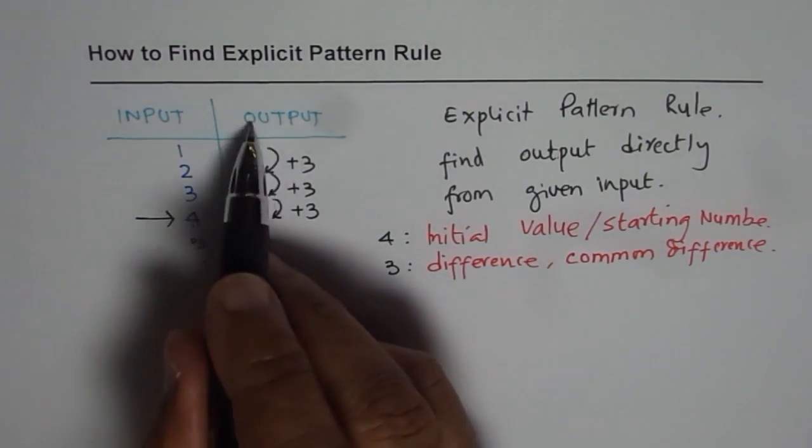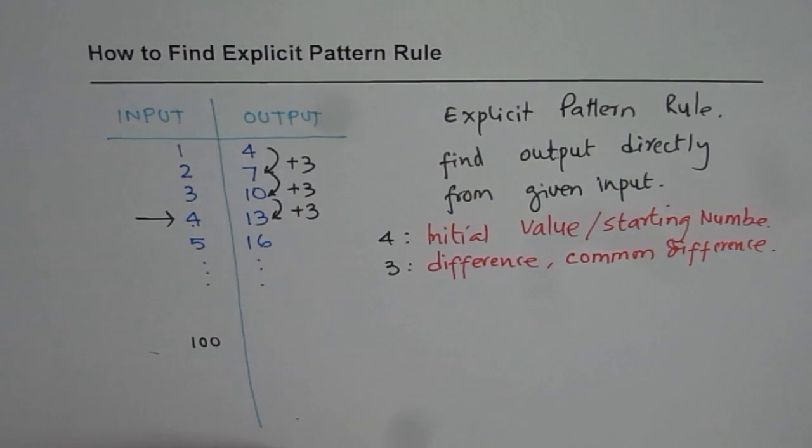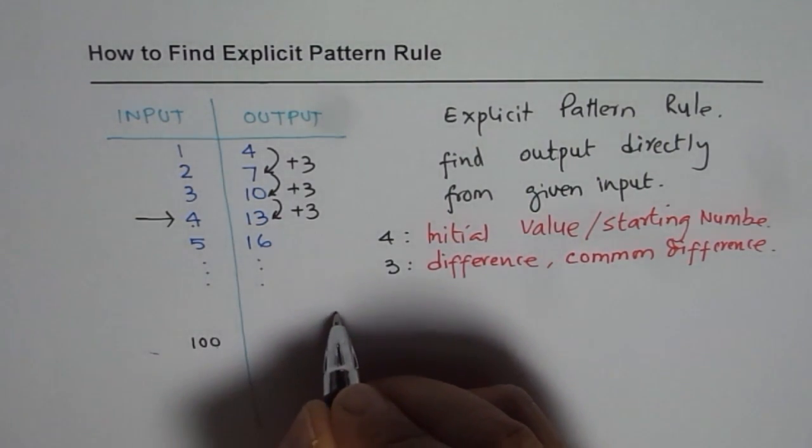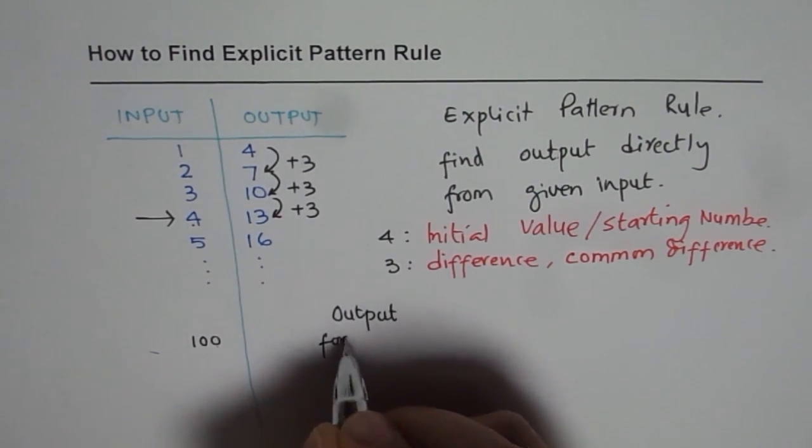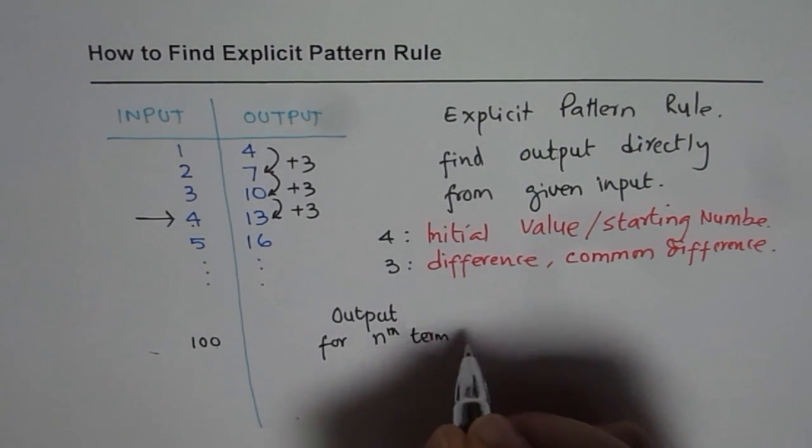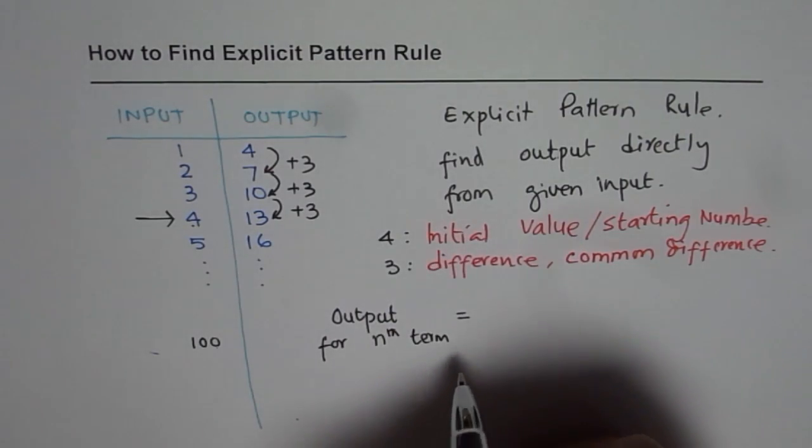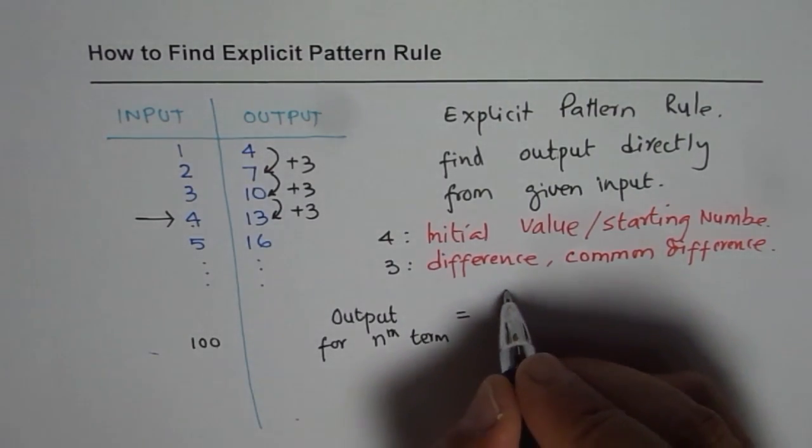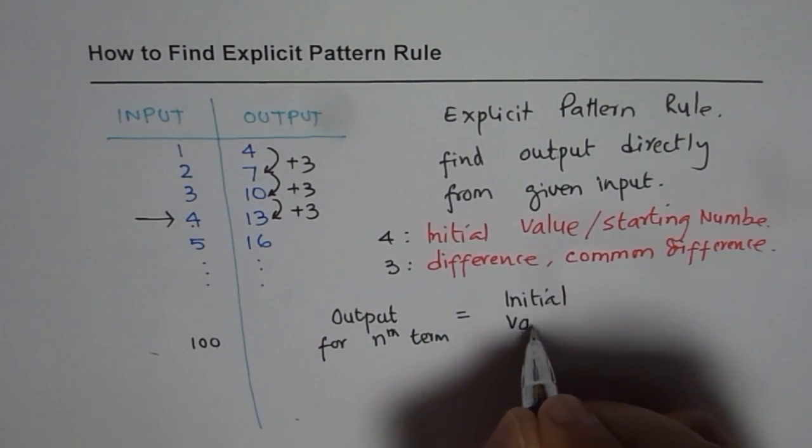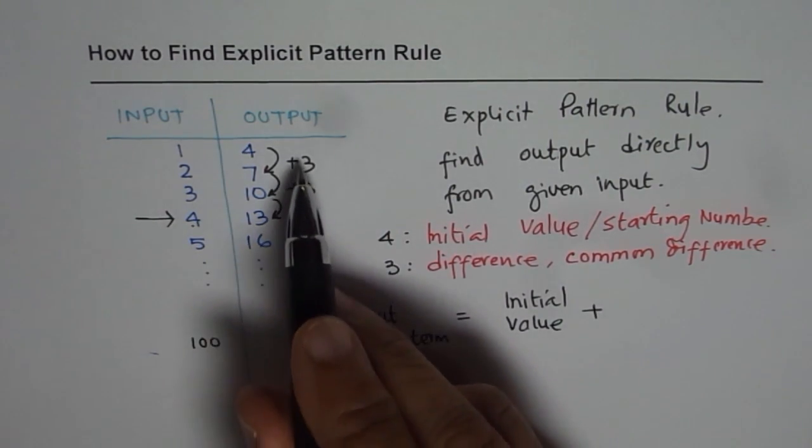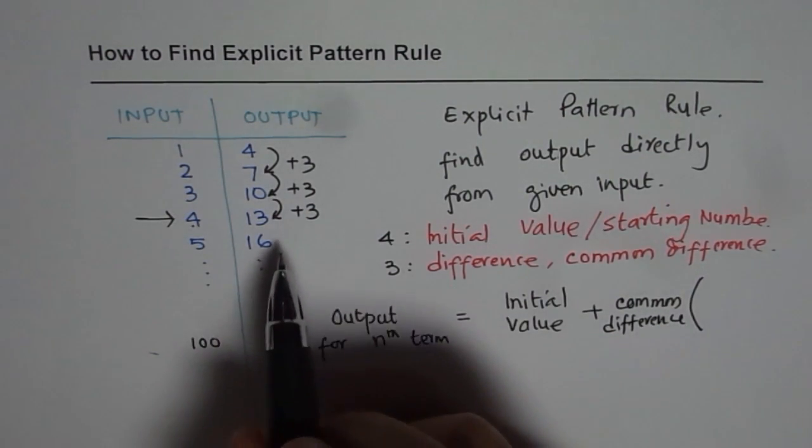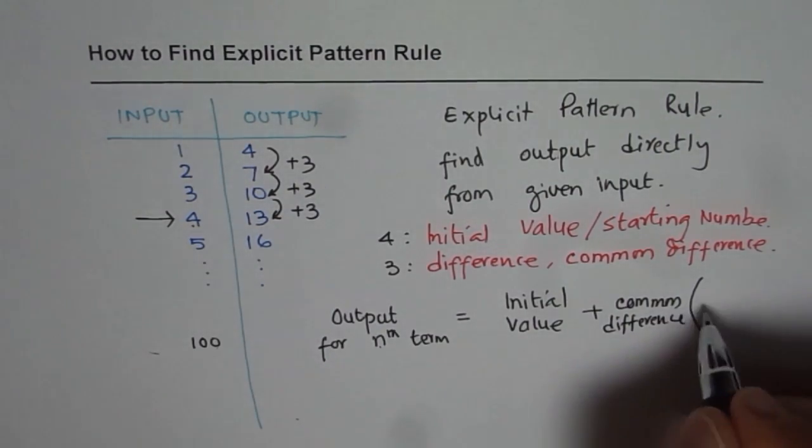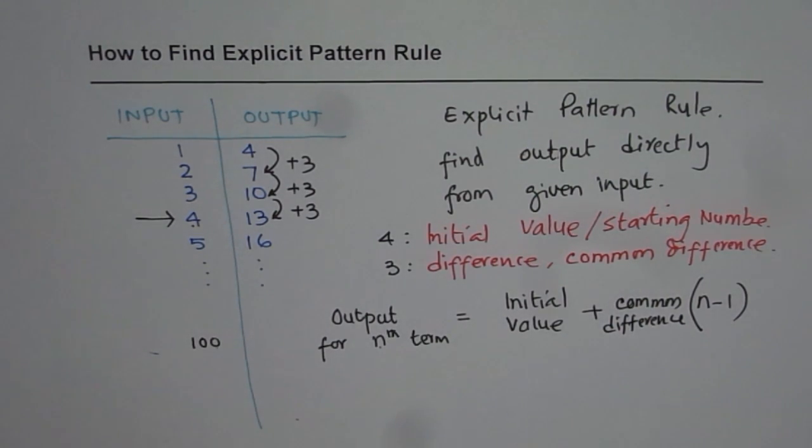The formula will be that the output of 100th term for example will be how much? Let us say nth term. So we say output for nth term is equal to initial value or the starting value which is 4 in our case. We will write general formula first: initial value plus common difference times how many times is it multiplied? n minus 1, one less than n. That gives us the formula.